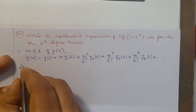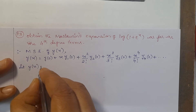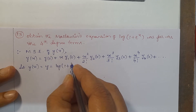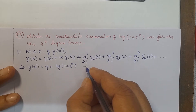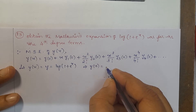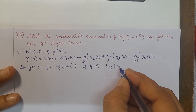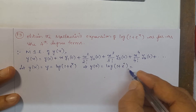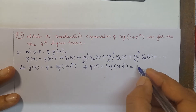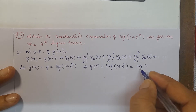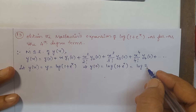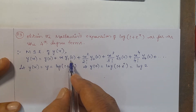Let y(x) = log(1 + eˣ). Find y(0): y(0) = log(1 + e⁰) = log(1 + 1) = log 2. So y(0) = log₂ base e, the natural logarithm of 2.